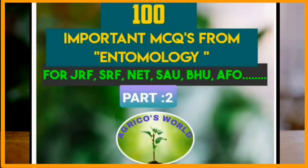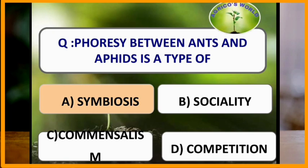Hello everyone, welcome to our channel Agricoast World. In this video we are going to discuss some important questions related to entomology which are asked in most competitive exams. Our first question: the relationship between ants and aphids is a type of symbiosis.